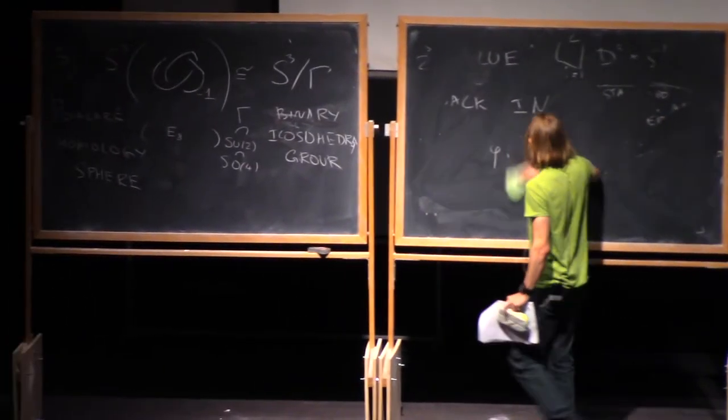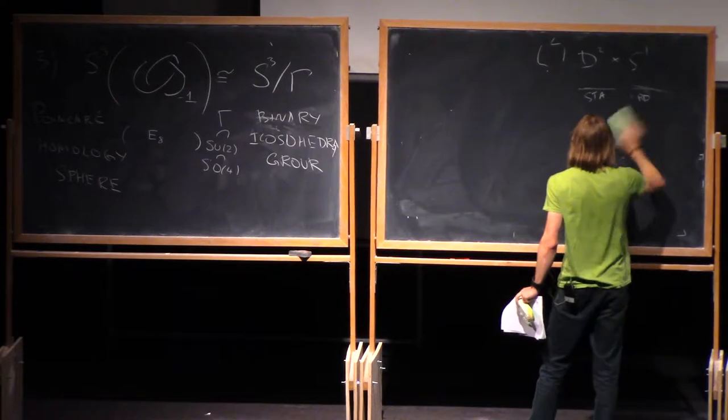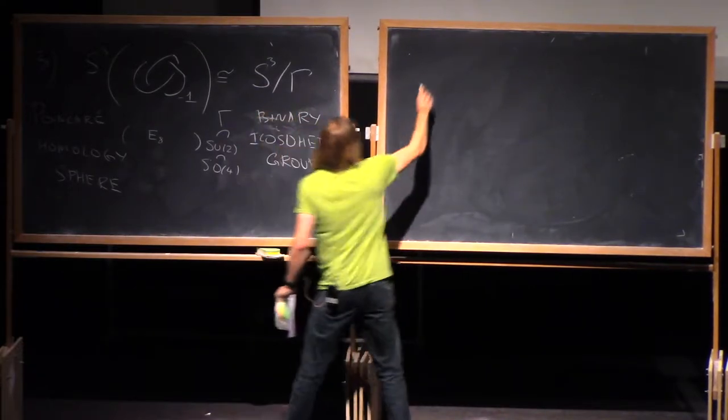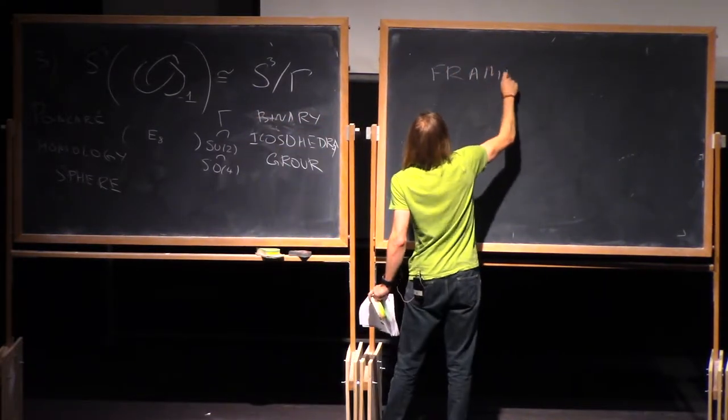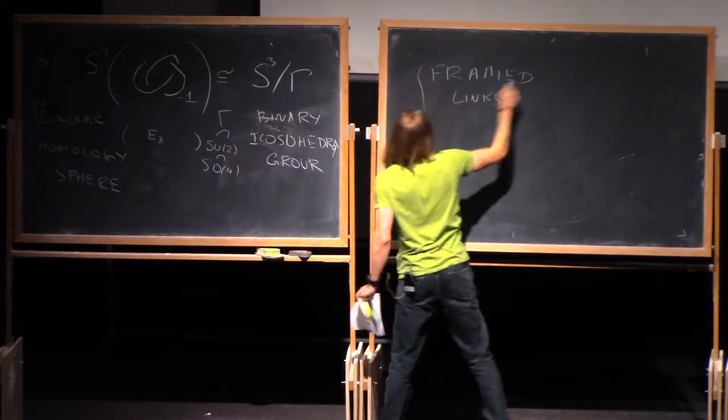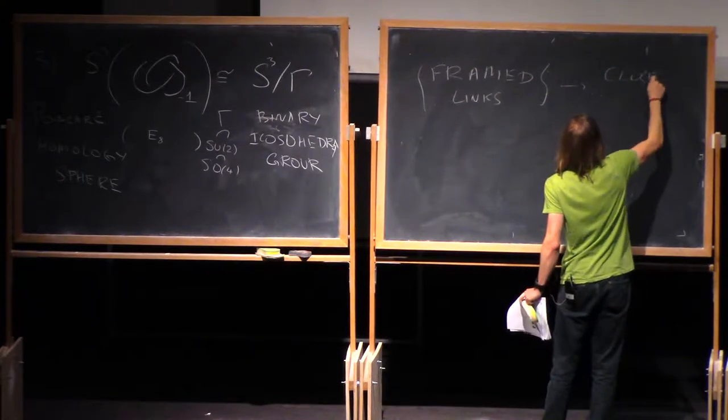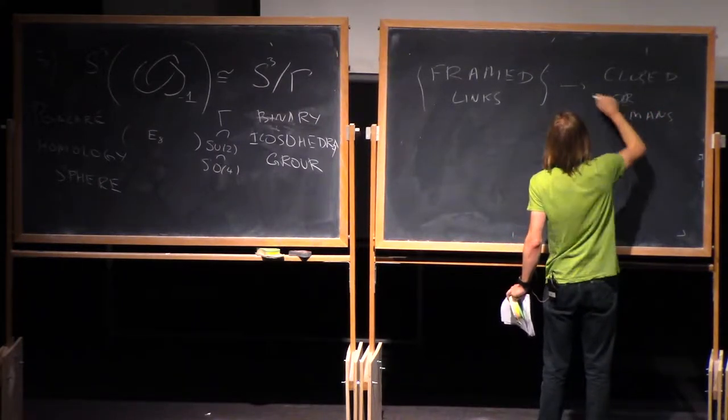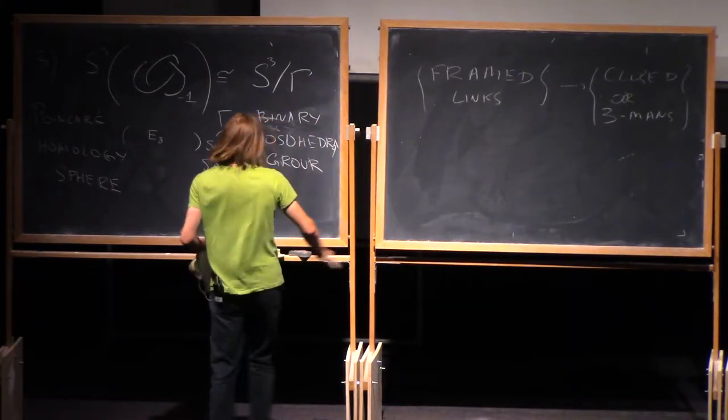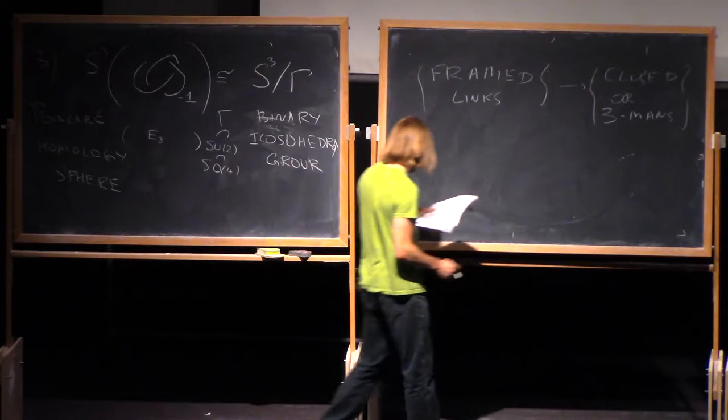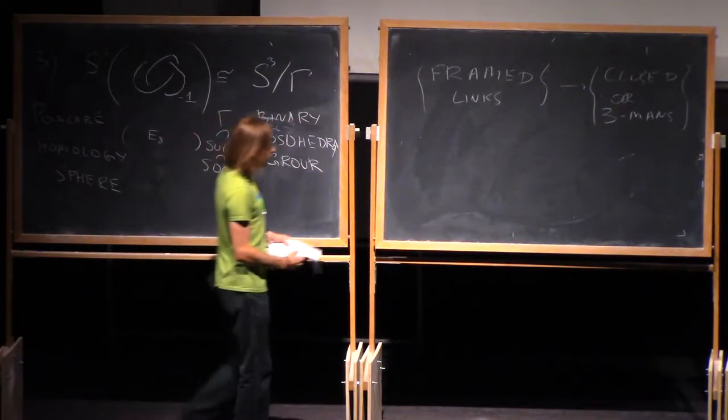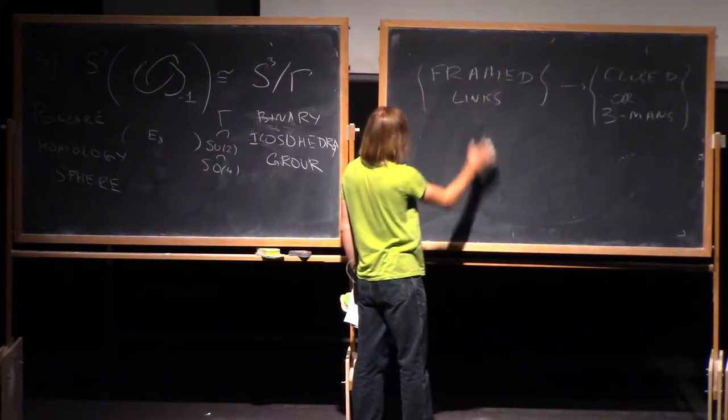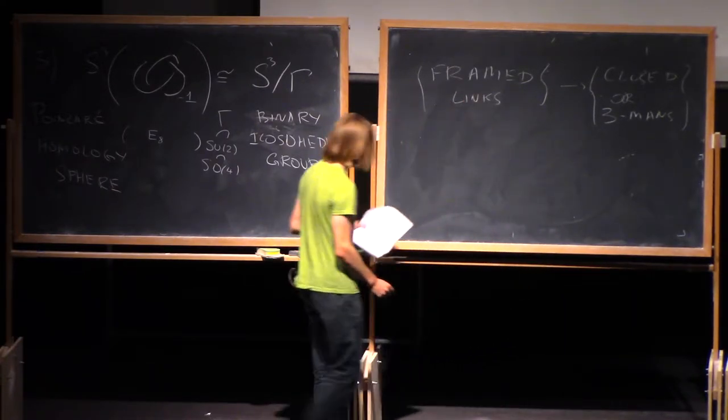So now, there are two important statements. We obtain a map from framed links to closed oriented manifolds. And of course, here we probably want to consider this up to ambient isotopy, and here up to homeomorphism. So the question is, is this map surjective? Can we obtain all three manifolds in this way? And the other question is how can we understand the kernel of this map? And there is a precise answer to both of these questions.